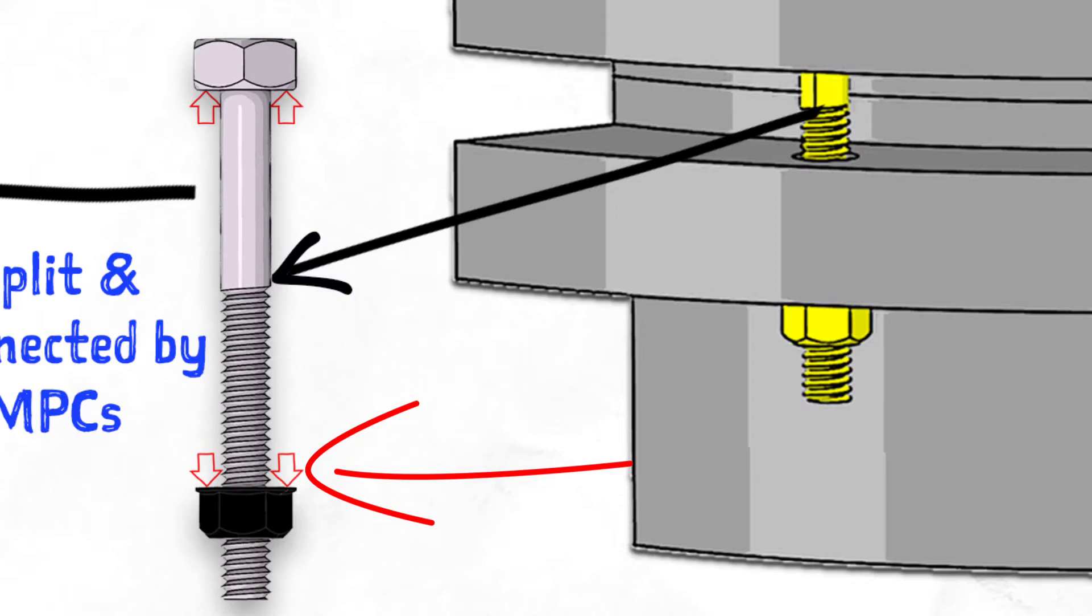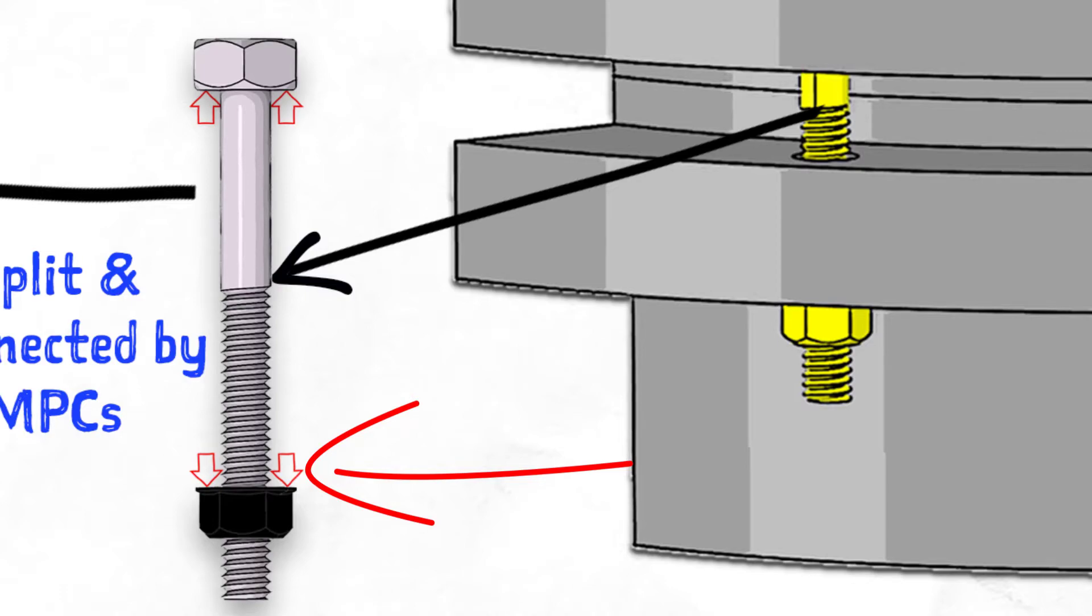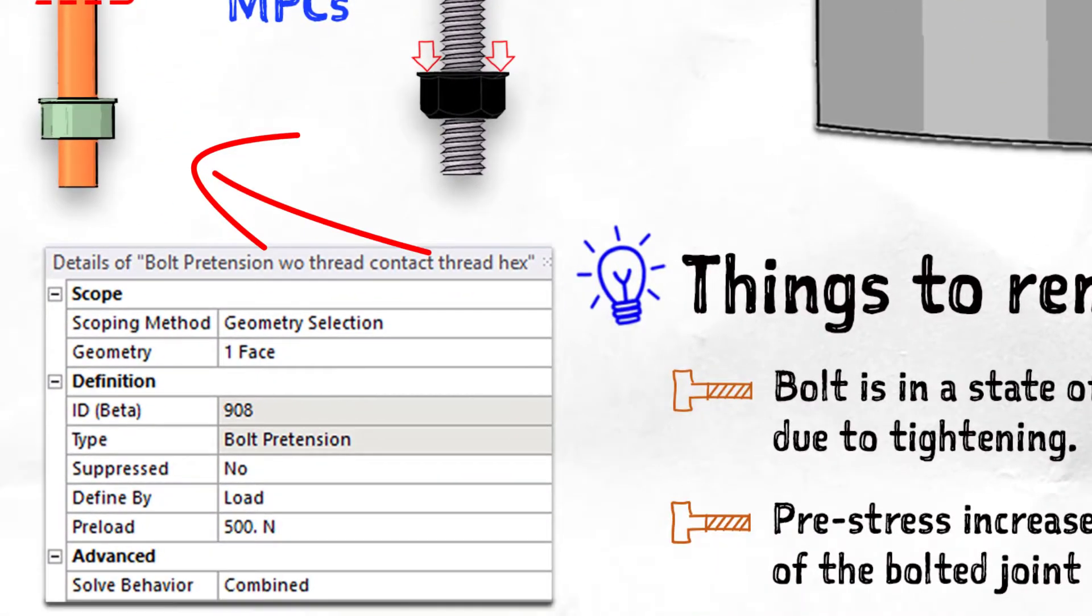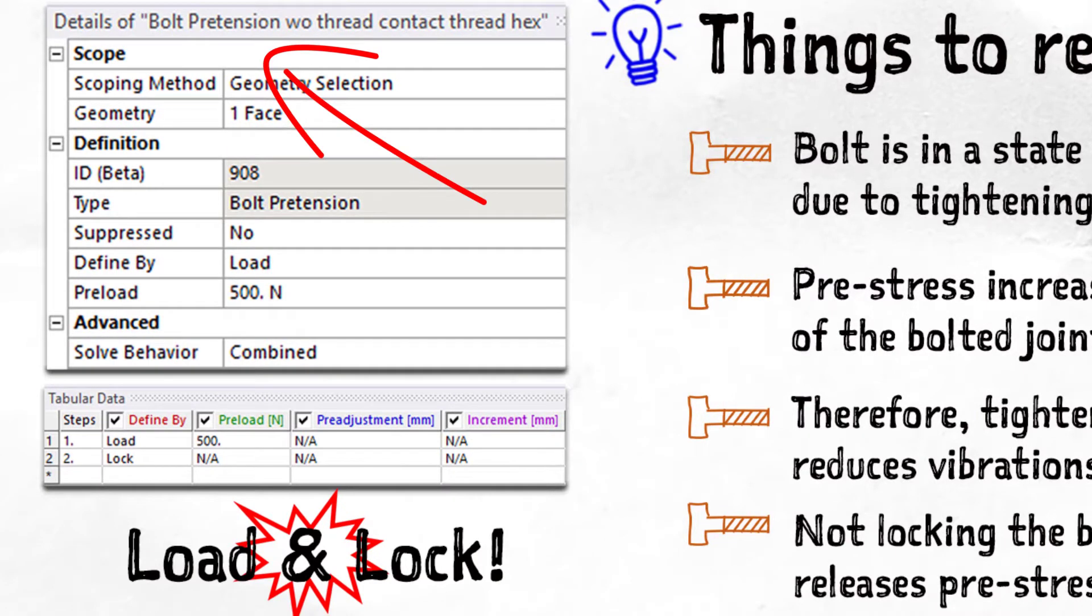In finite element analysis, this behavior is modeled by splitting the bolt shank into two halves, connecting them using MPCs and then pulling them towards each other to mimic the state of tension. In ANSYS Mechanical, this type of load is defined using the bolt pre-tension object. The user has to scope it to the bolt shank, define pre-load in the first load step, and then set it to lock in subsequent steps and the rest is taken care of.